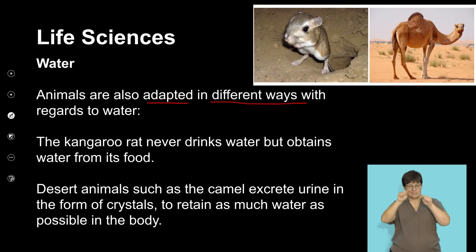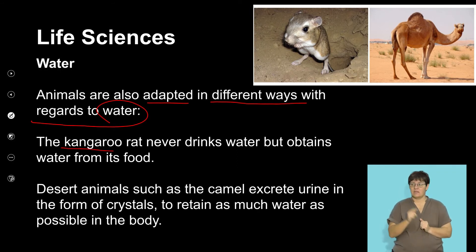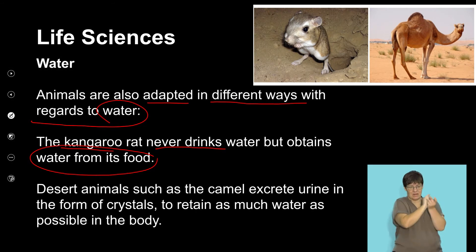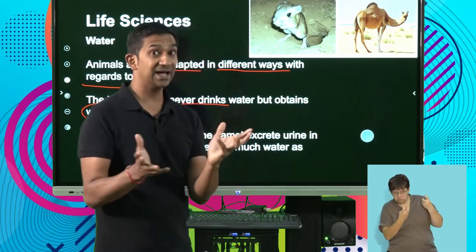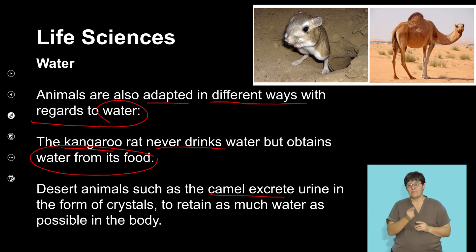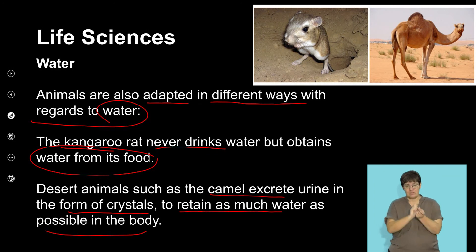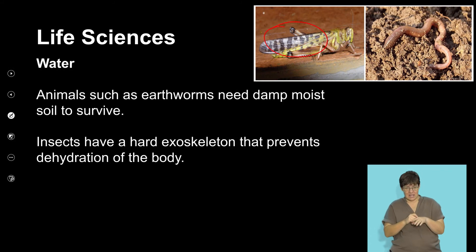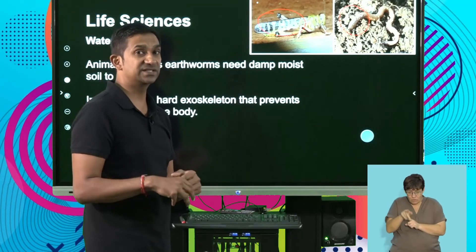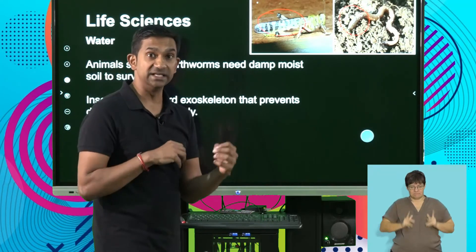Animals are also adapted in many different ways regarding the availability of water. The kangaroo rat basically never drinks water but gets most of its water from food — an adaptation for living in dry arid conditions. Desert animals such as camels excrete large amounts of very crystallized urine to retain as much water as possible. Insects have a thick exoskeleton that prevents dehydration. Earthworms rely on moist, damp soils. The availability of water can influence organisms significantly, and accordingly they have adapted to living in these different environments.